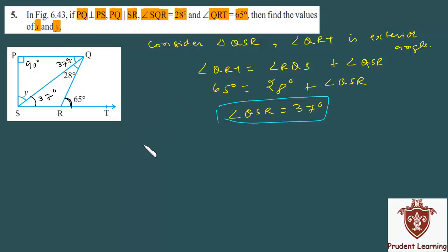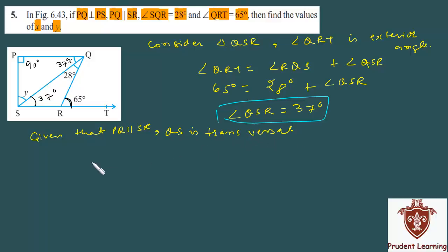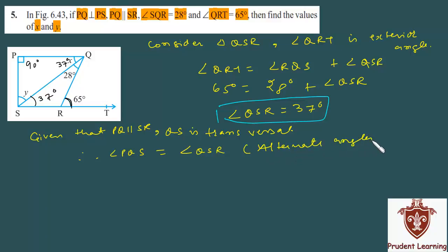Now let's write it down. Given that PQ is parallel to SR and QS is a transversal, therefore angle PQS, which is x, equals angle QSR, which is 37 degrees — the reason being they are alternate interior angles. So angle PQS, which is x, equals 37 degrees.